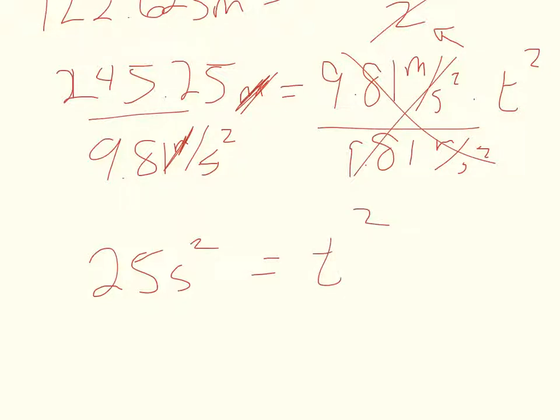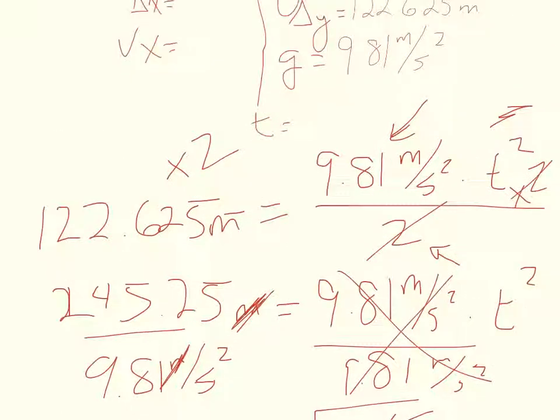245.25 divided by 9.8 turns out to be 25 seconds squared = t². We want to get rid of this square here, so I'm going to square root both sides. 25 square rooted is 5 seconds. 5 seconds = my time. Excellent. That's easy. I'm glad that I set it up that way.